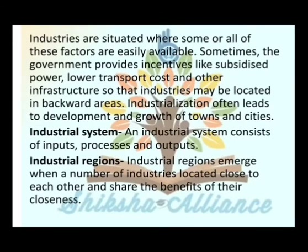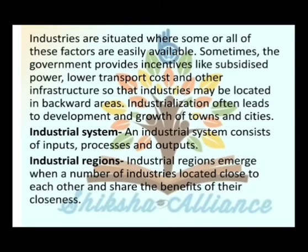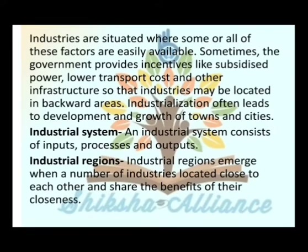An industrial system consists of inputs, processes, and outputs. Industrial regions emerge when a number of industries are located close to each other and share the benefits of their closeness.